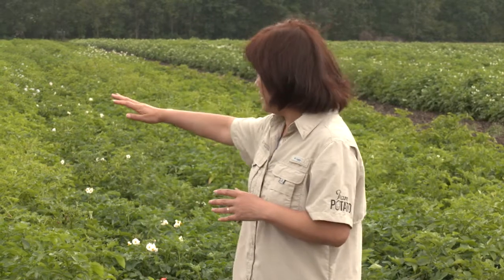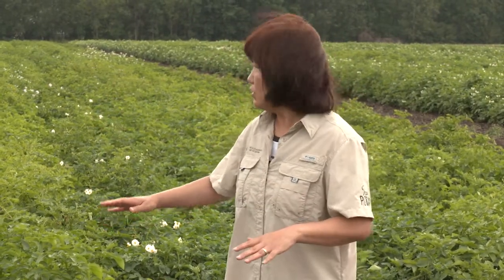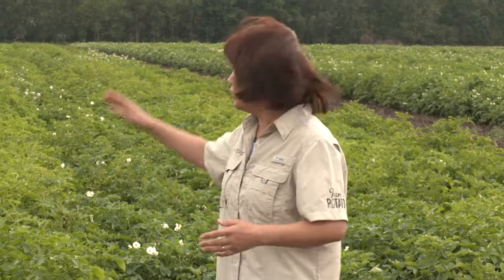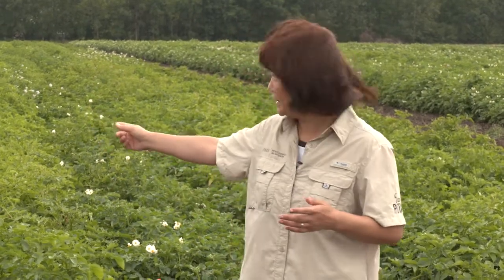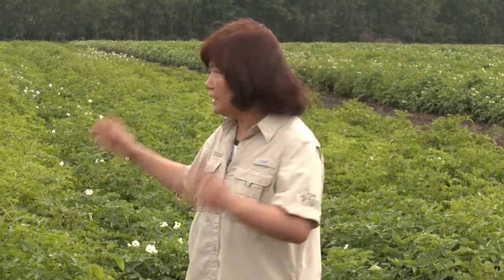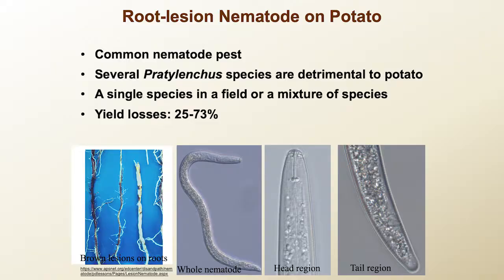This nematode — you want to see it on potato plants, but most of them are underground. So we can't go to a field and see the disease caused by root lesion nematode. You need to dig the plant out and take a sample from the soil around the root zone. We can do a very specific nematode detection assay to detect the nematode problem.